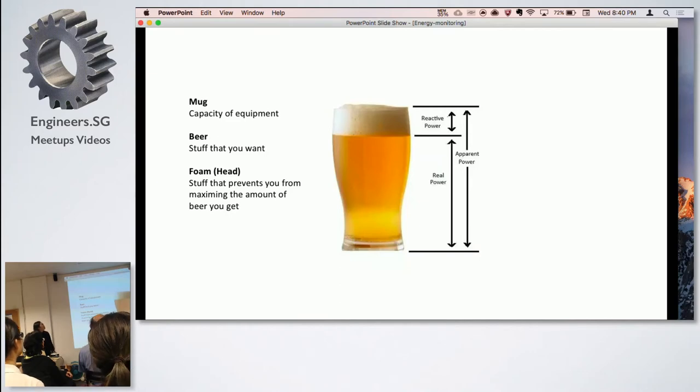To fully understand this, I think this is the best analogy. You have a mug - your mug is the capacity of your equipment. The beer is the stuff that you want, this is the real power. The foam is actually the reactive power which does not do any work on the system.